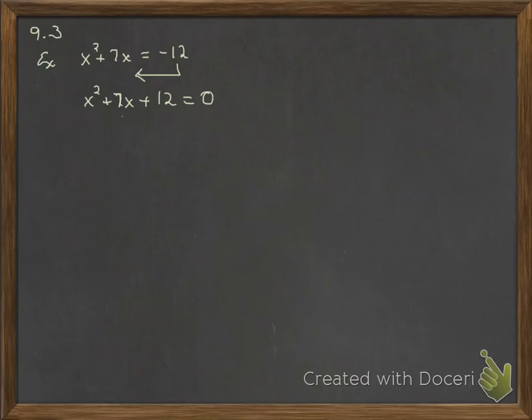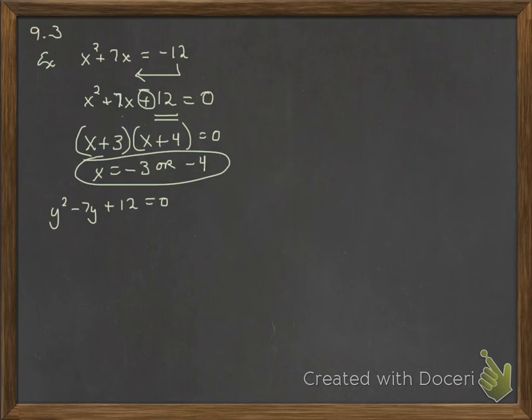I'm thinking to myself two numbers that multiply together to give me 12 and their sum, because it's a positive, they'll have the same sign, their sum will be 7. So, that would be 3 and 4. Foil back to make sure it worked, please. Okay, and so your answers will be setting each part to 0.